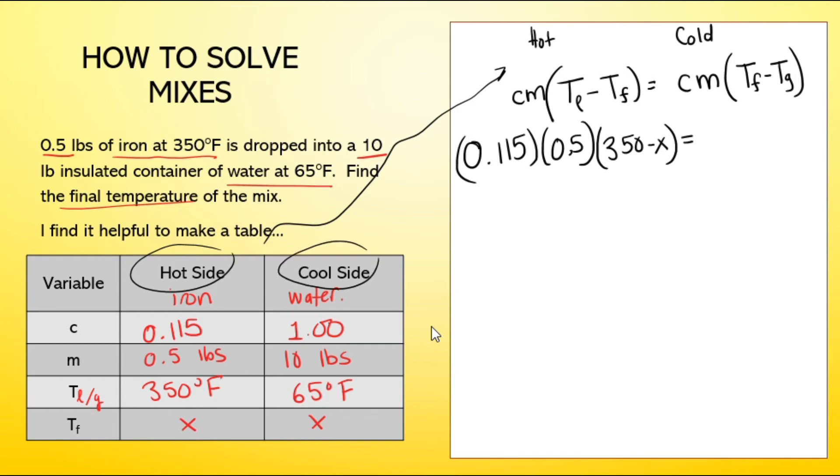Now I head back and do the same thing for the cold side. The specific heat of water is 1, the mass of water that we have is 10, and the final temperature, we don't know, it's X. So notice the difference where the X is on either side. Super important or things will not go correctly. Minus 65.